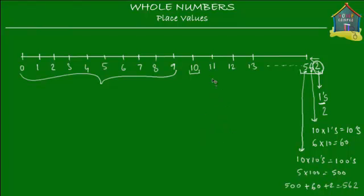So this is really all that there is to place values. The position in which a digit is placed will determine its value. If the digit is placed in the 1's place, its value will be that digit times 1. If it's placed in the 100's place, its value will be that digit times 100. If it's placed in the 1,000's place, its value will be that digit times 1,000. So let's learn about all the places up to 100 million.